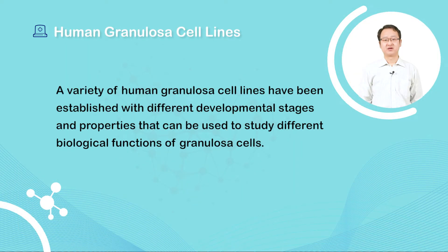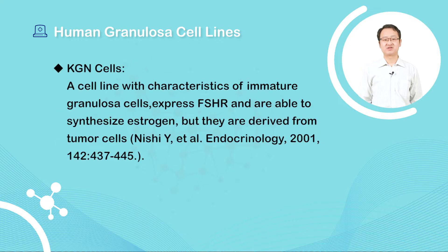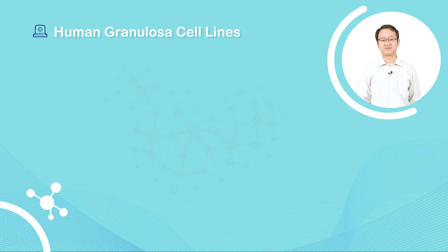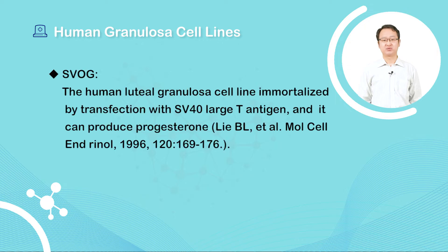A variety of human granule cell lines have been established with different developmental stages and properties that can be used to study different biological functions of granule cells. KGN cells have the characteristics of immature granule cells, express FSHR, and are able to synthesize estrogen, but they are derived from tumor cells. SVOG is a human luteal granule cell line immortalized by transfection with SV40 large T antigen, and it can produce progesterone.